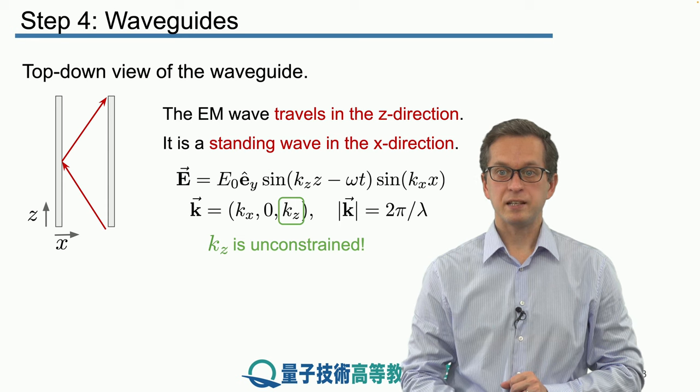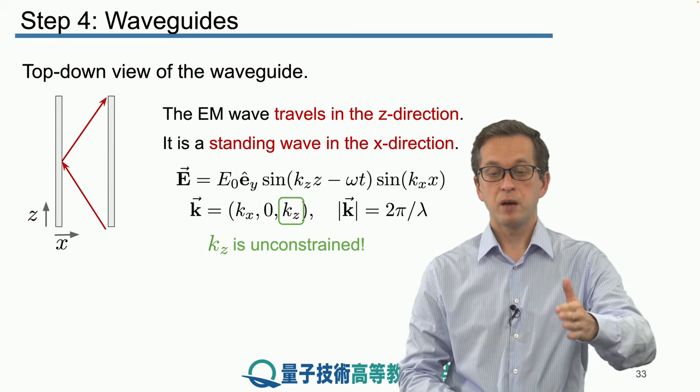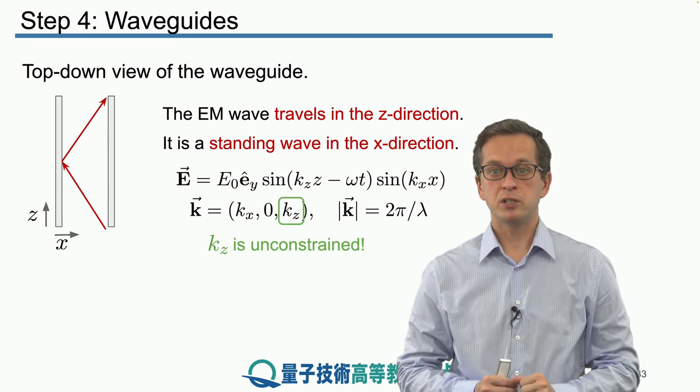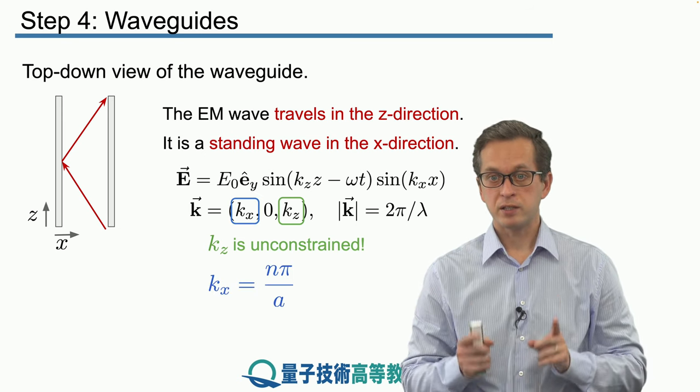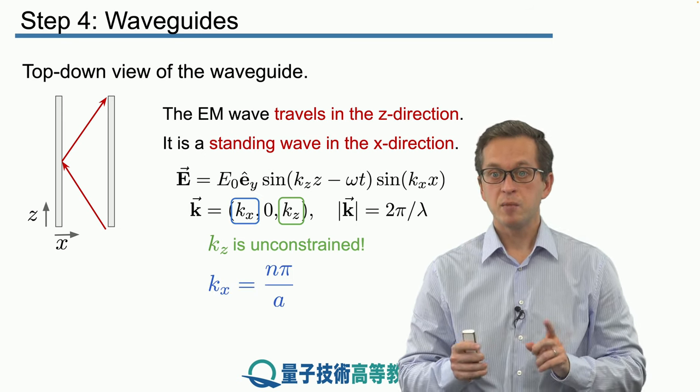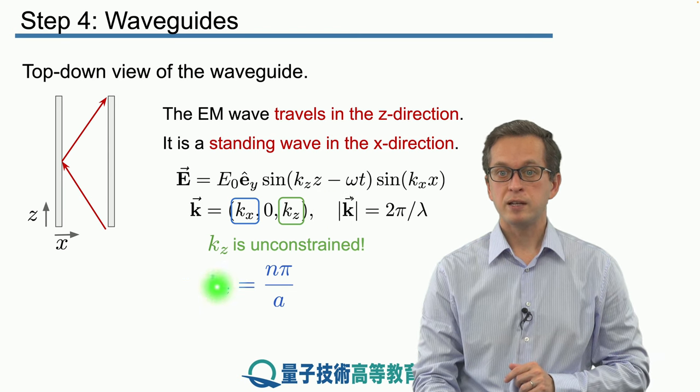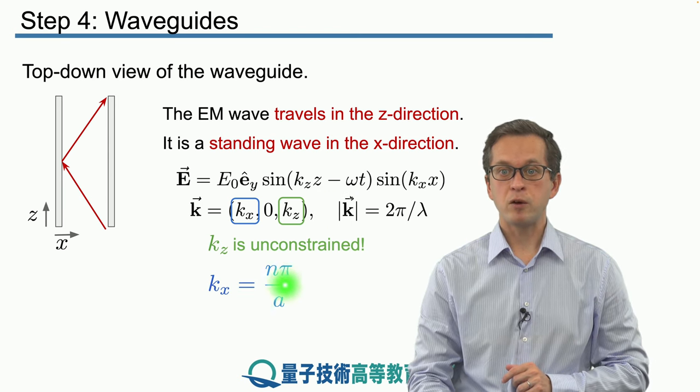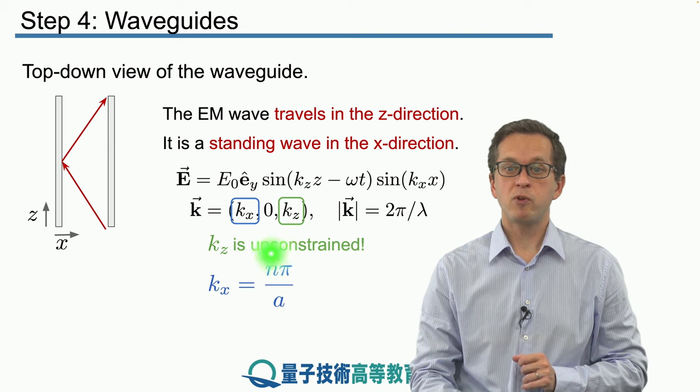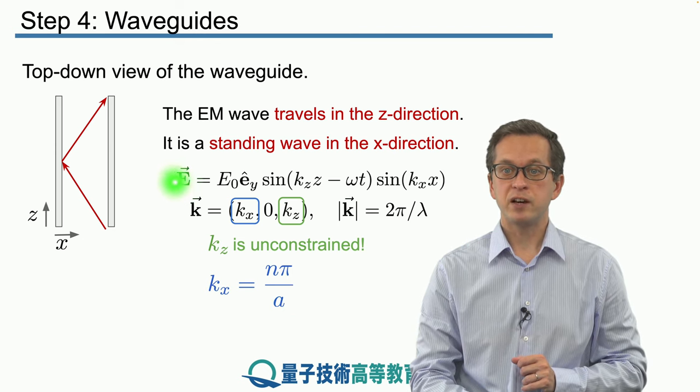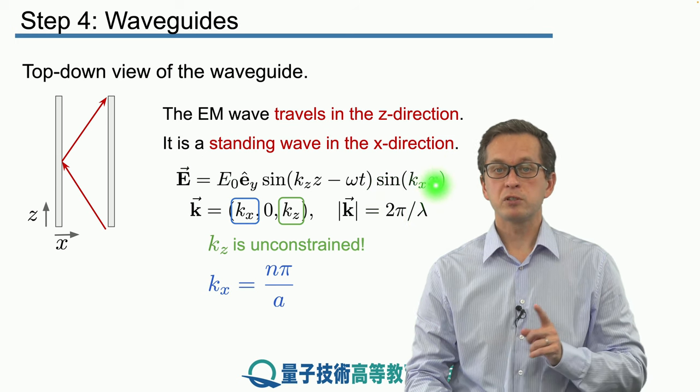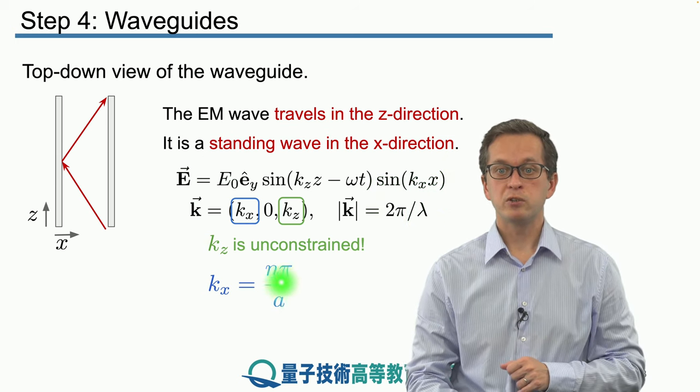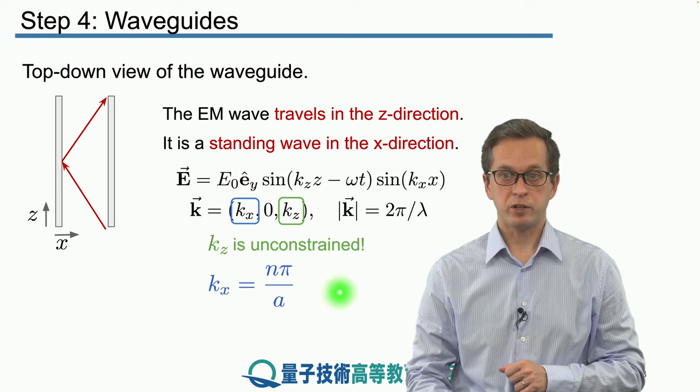So, we said that kz is unconstrained, the wave can just travel, because there are no boundary conditions imposed onto the wave. But, in the x direction, we said that we must have a standing wave, meaning that kx must be an integer multiple of pi over 2. Why pi over 2? Because we require that the electric field must vanish at x equals 0, which is automatically true, and also x equals a, which is only true when kx is given by this expression.